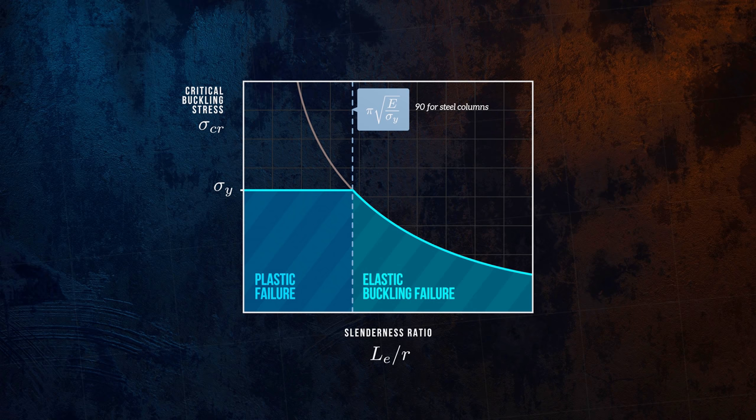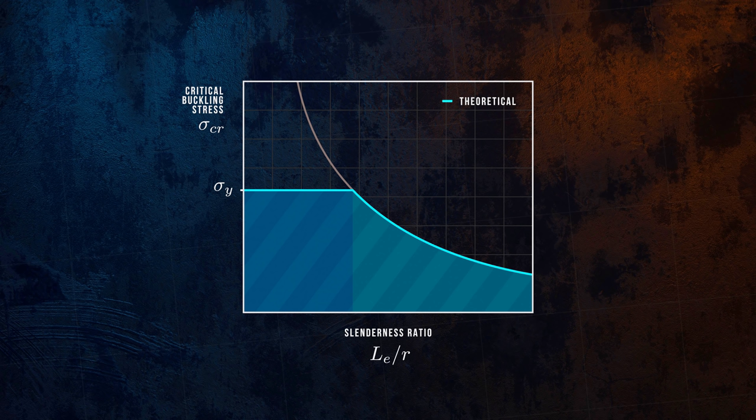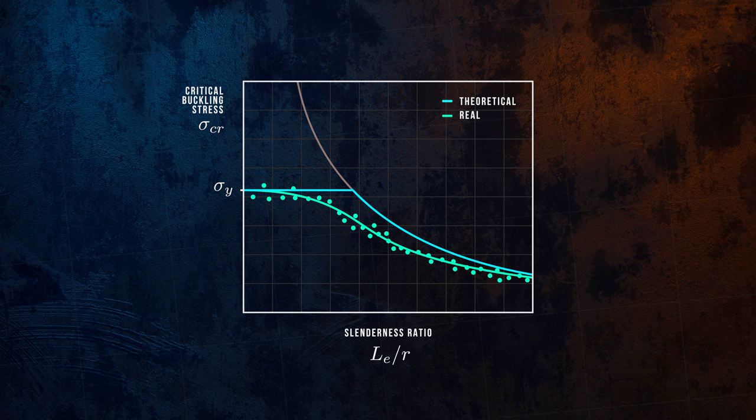But this curve only represents the theoretical behaviour of columns. If we plot buckling stresses determined experimentally for real columns, we can see it doesn't exactly match the theoretical behaviour. In particular, the transition between plastic failure and elastic buckling failure is much more gradual.